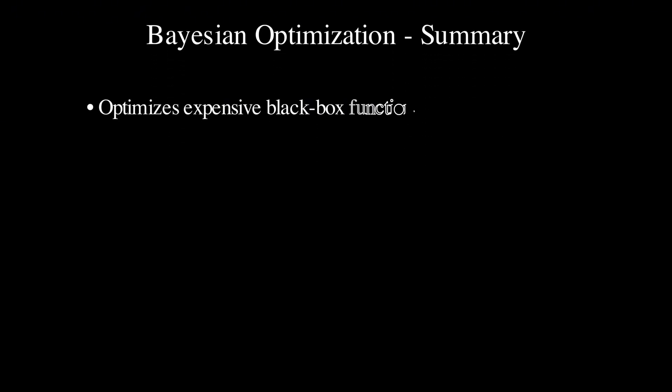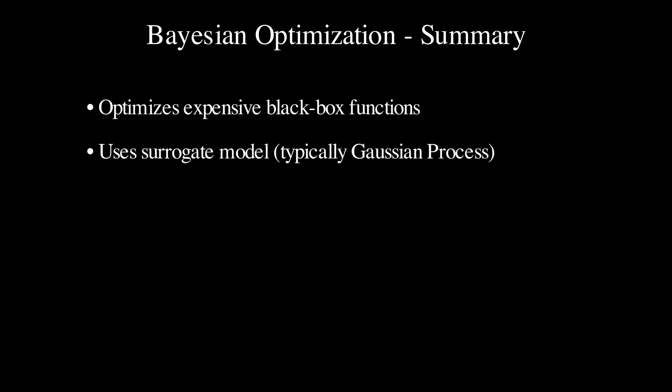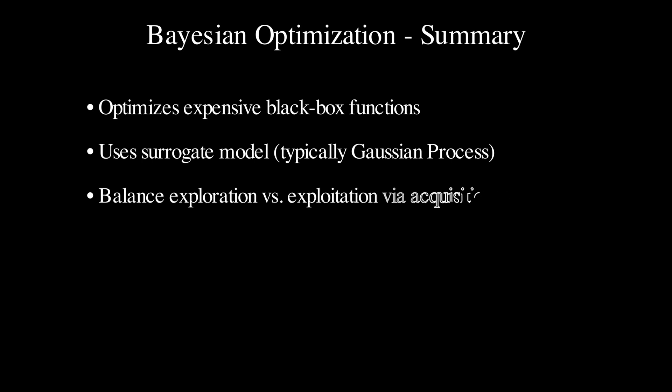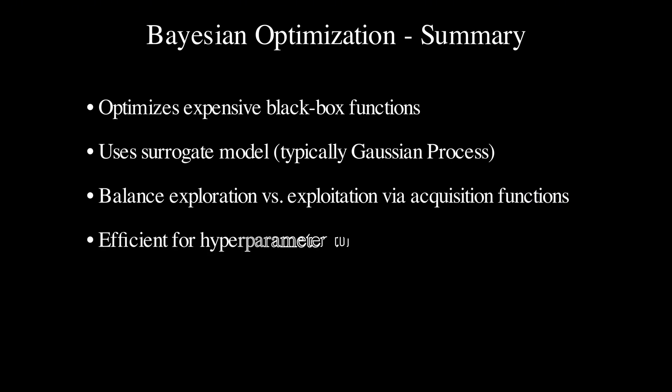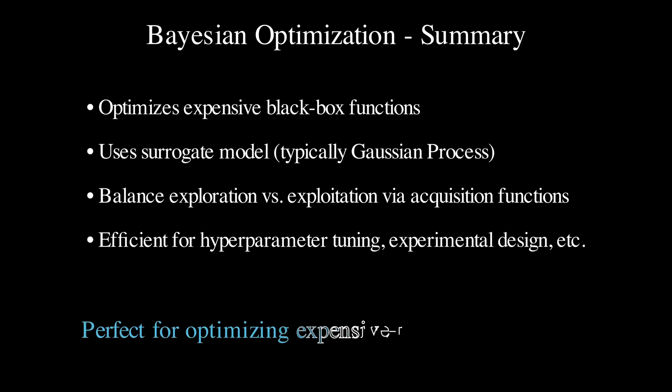To summarize: Bayesian optimization is perfect for optimizing expensive black-box functions. It uses surrogate models like Gaussian processes to model the function, balances exploration versus exploitation through clever acquisition functions, and effectively refines the optimum with minimal evaluations. The next time you are faced with an expensive optimization problem — whether it's finding oil, tuning hyperparameters, or designing experiments — remember that Bayesian optimization could be very useful in this process.